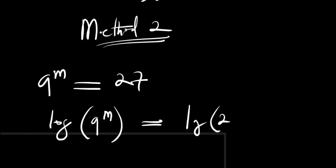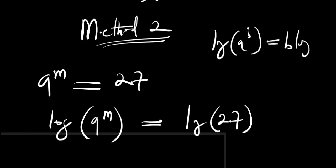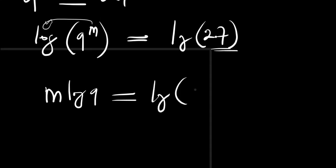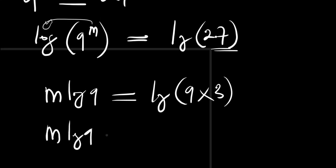Now if you have log of a power b, this equals b times log of a. That means the m will come in front, giving us m times log of 9 equals log of 27. We can express log of 27 as log of 9 times log of 3, since 9 times 3 is 27. So we have m times log of 9 equals log of 9 plus log of 3.